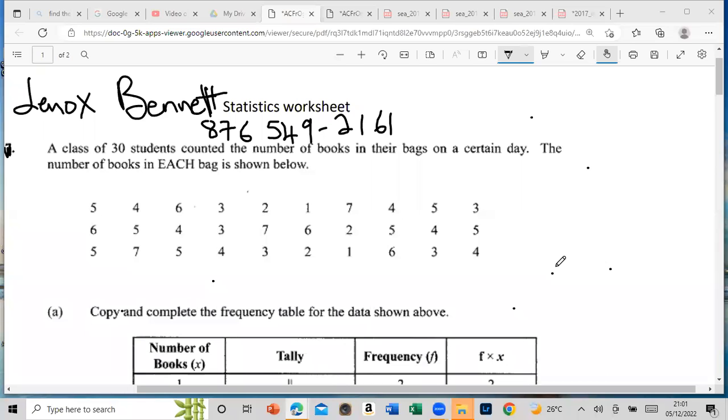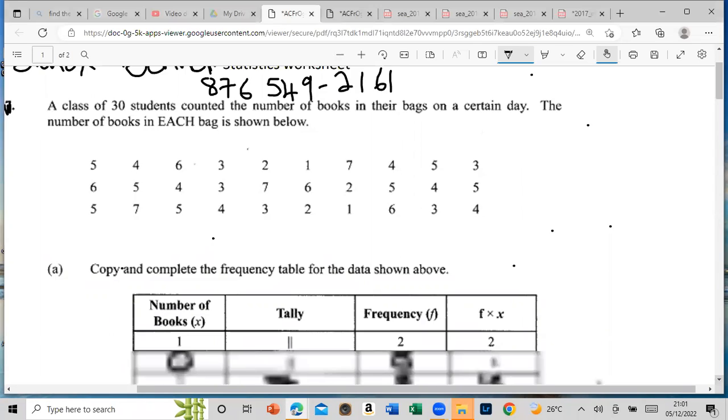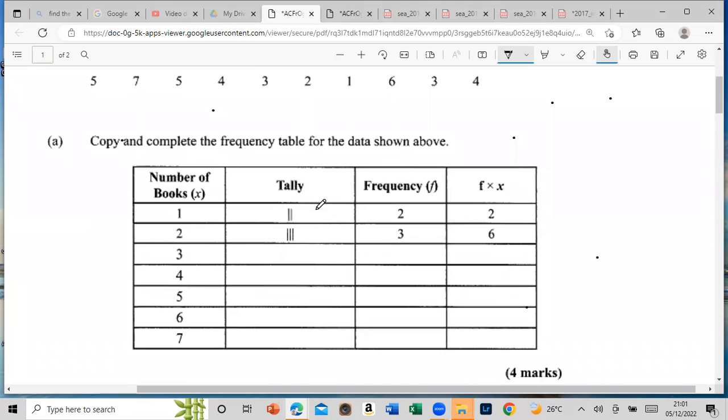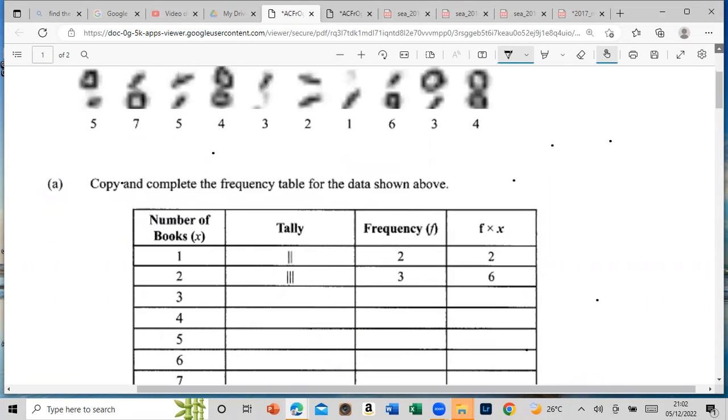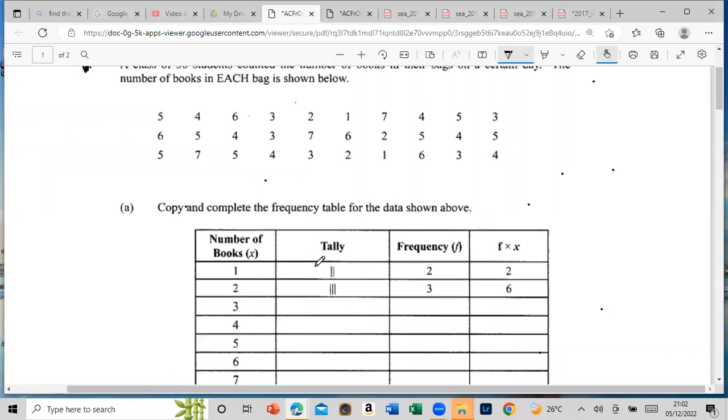This is a class of 30 students and this is basically the table. It says copy and complete the table. So what we're gonna do first, notice what they did. The ones, two ones, see? And then it should be two times one. And then this will be three times two which is six. So we're gonna do the same thing for the rest.